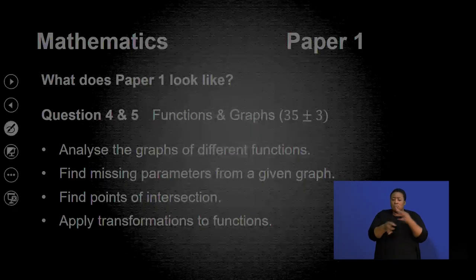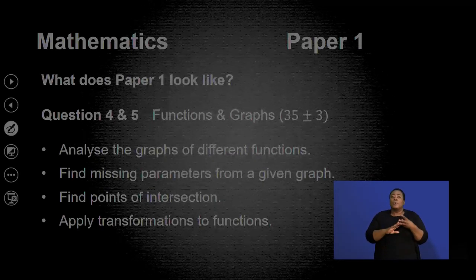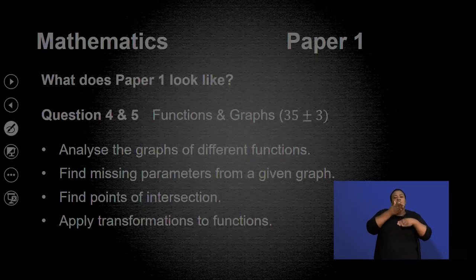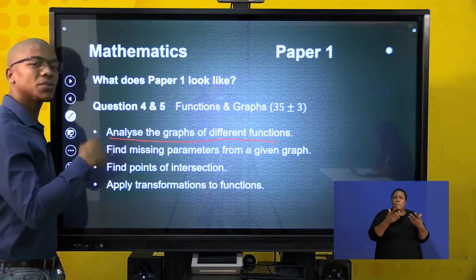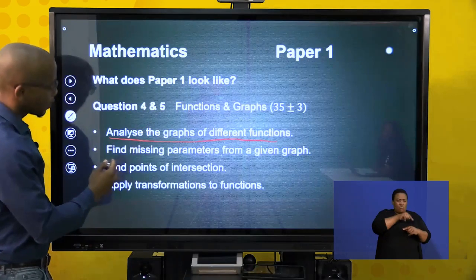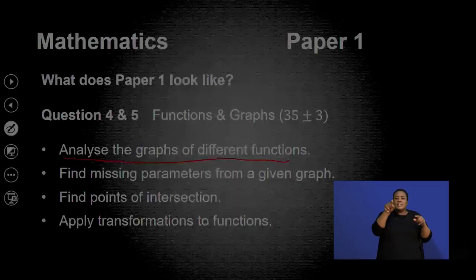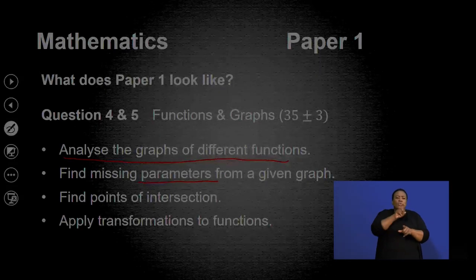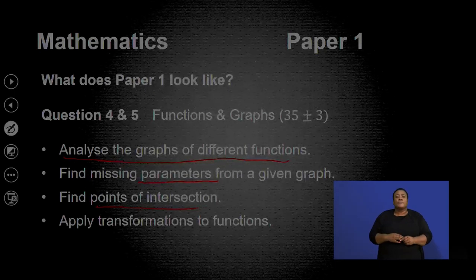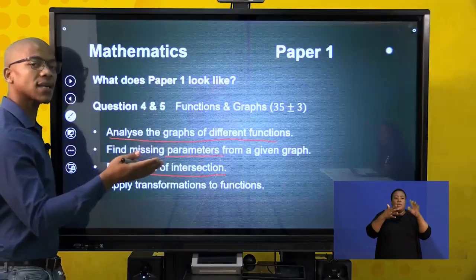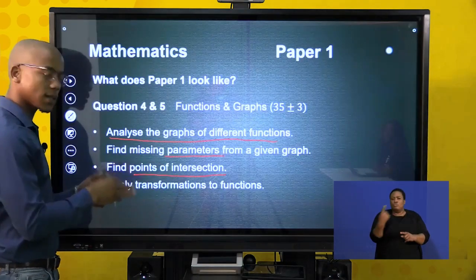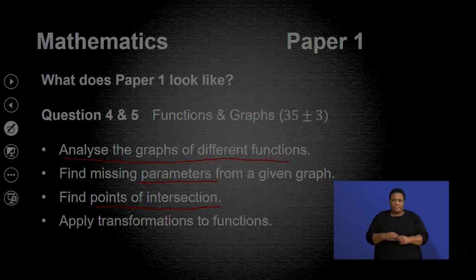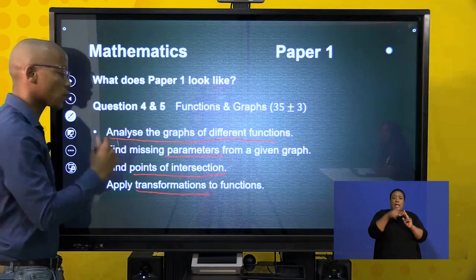Questions 4 and 5 are functions and graphs, ranging between 35 plus or minus 3 marks. You need to analyze graphs of different functions — talking about domain, range, where one graph is greater than another, and finding missing parameters from a given graph including x-intercept, y-intercept, and turning points. You also need to find points of intersection — where the two graphs are equal, we equate them — and apply transformations to functions, such as translating 2 units up or 3 units to the right.